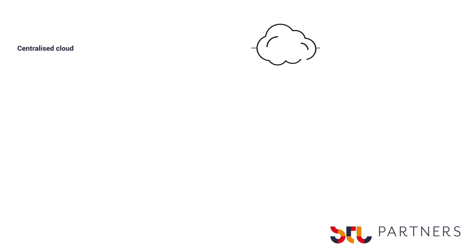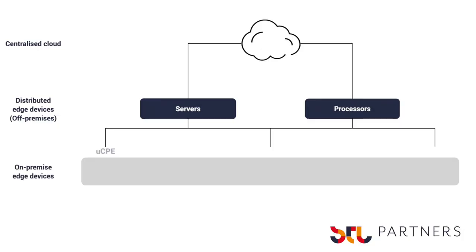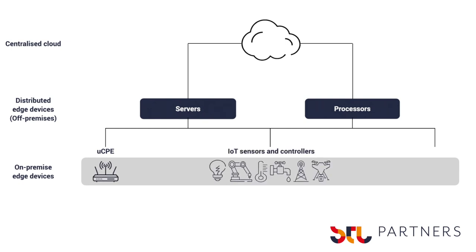Edge devices come in many different shapes, sizes and capacities. We have broken these devices down with some sitting in the edge data center, such as servers and processors. These devices are typically much more powerful than those that reside at the customer premises, such as UCP boxes, IoT sensors and controllers, and finally smart cameras.